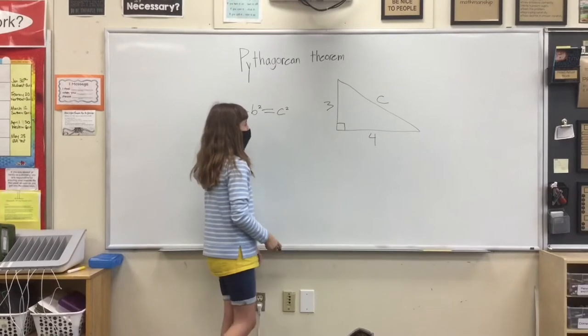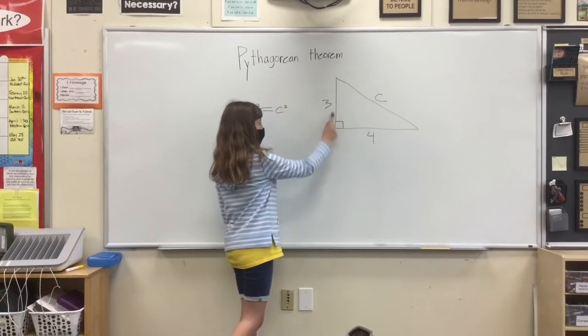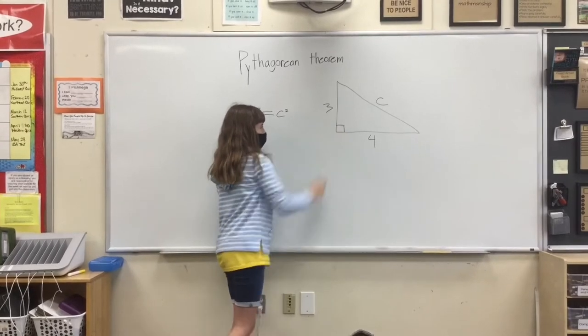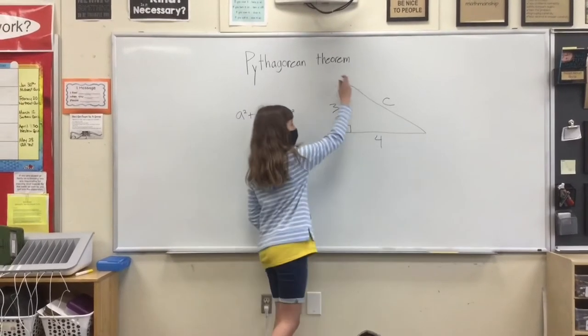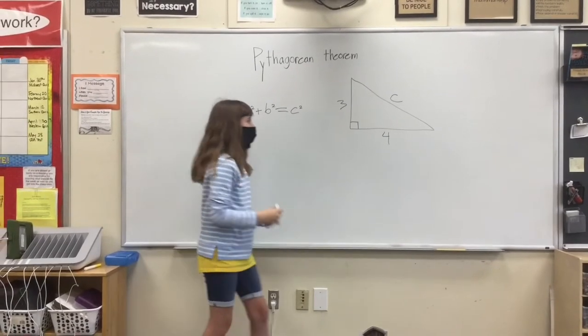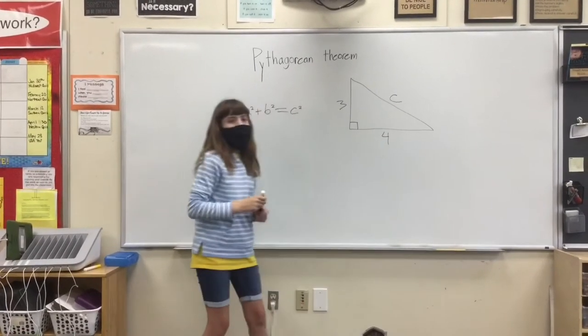So a and b are always going to be these two lines connected in a right angle, and c is always going to be this one. This equation works to find c in any right triangle.